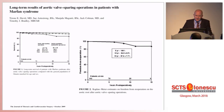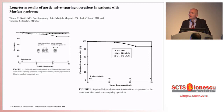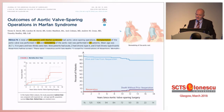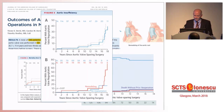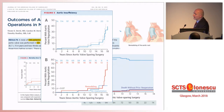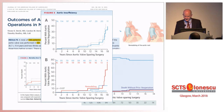Nevertheless, the David data show better durability with re-implantation than root remodeling. His most recent publication in JACC, three years ago, shows similar information — excellent long-term results, freedom from re-operation of close to 90% at 18 years. And when he compares remodeling, there is a worrisome increasing incidence of relevant aortic regurgitation beyond 15 to 16 years.